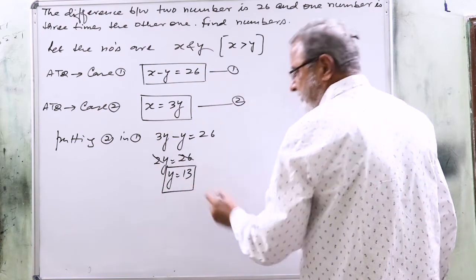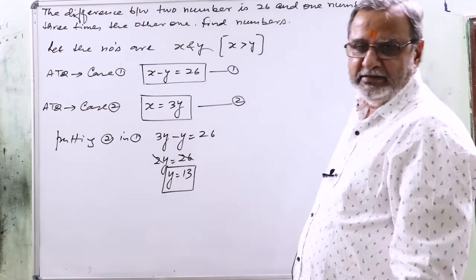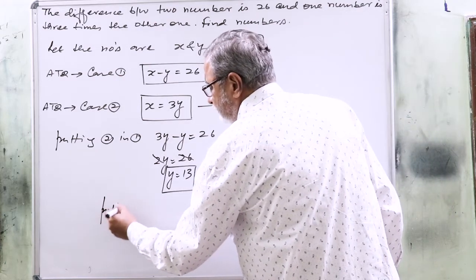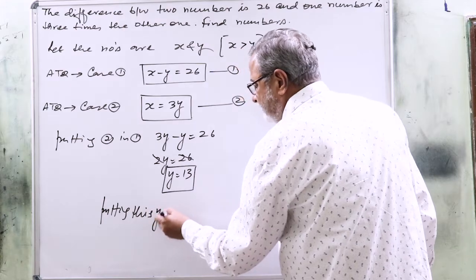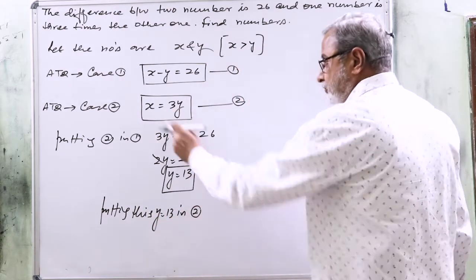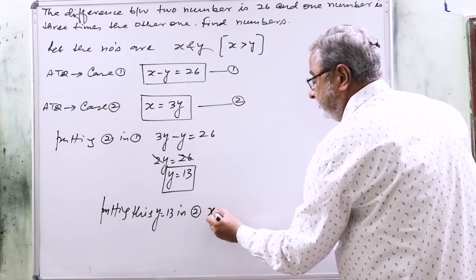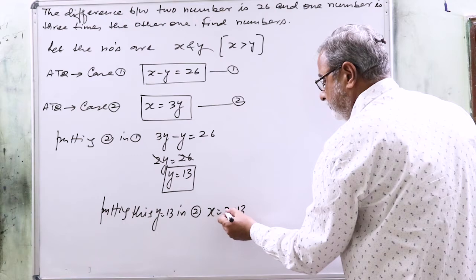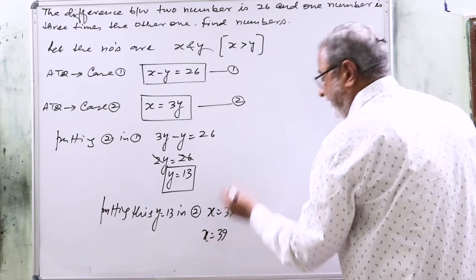So this is, the smaller one is 13. Putting y equals 13 in equation 2, x equals 3 into 13. So x will be 39.